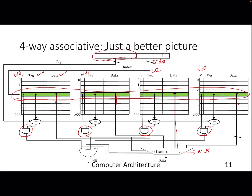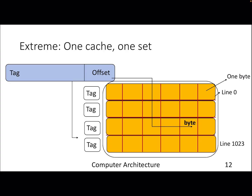In terms of access latency, associative caches have higher access latency because we are putting a multiplexer to select a particular line from multiple ways — which was not the case in direct mapped cache where there is only one block. The extreme example is a fully associative cache where the entire cache is one set. There is no need for index bits — you compare the tag for all blocks present in the cache, and whichever line gives a hit, you extract the corresponding byte. This is highly impractical because you need hundreds and thousands of comparators.